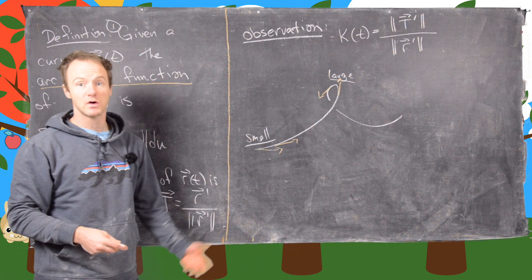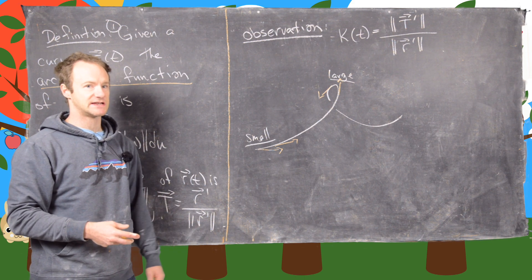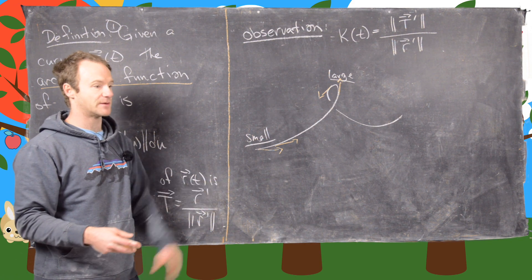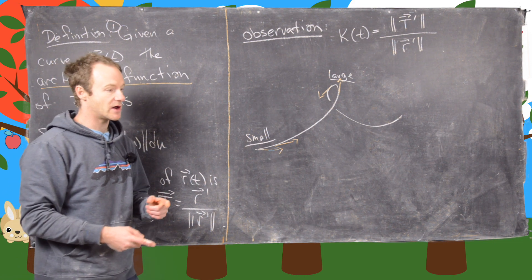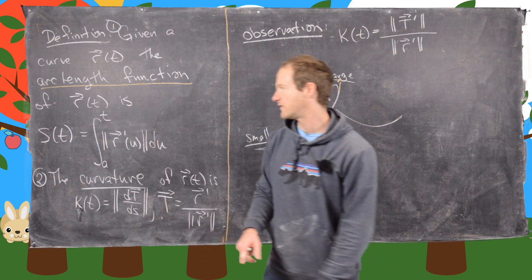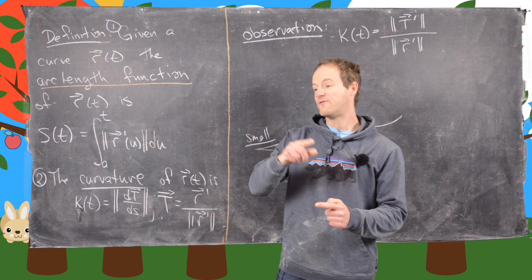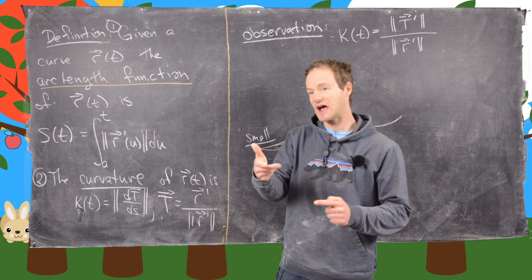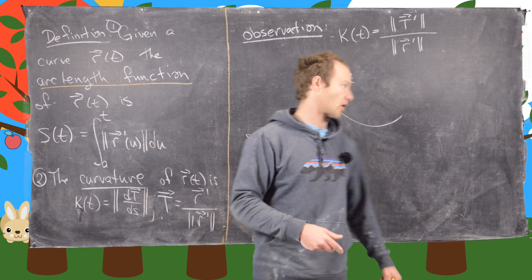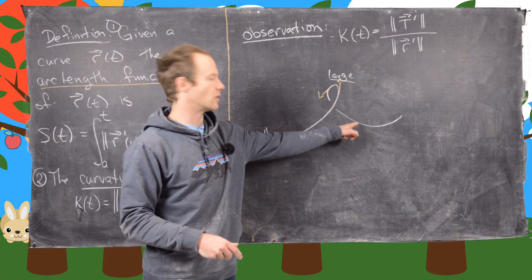We don't really care about the magnitude of the tangent vector — we really just care about the direction. Furthermore, we don't really care about how fast the particle is moving; we care about the tightness of the curve. That is why we use the unit tangent vector in the derivative, and take the derivative with respect to the arc length rather than with respect to time, which gives how fast the unit tangent vector is changing with respect to distance along the curve.